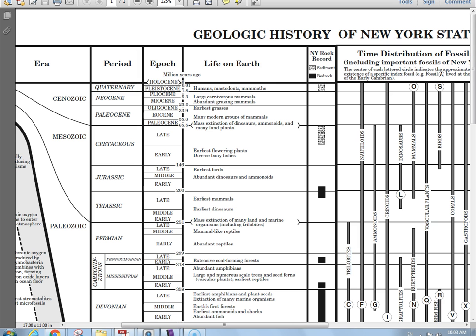So in terms of the Earth Science Reference Table for carbon-14 dating, you're really looking at the Holocene Epoch, which is under the Quaternary Period, that it would actually be useful for. You're certainly not going to use it for anything in the Devonian Age or anything like that.